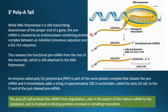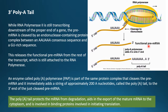The 5' cap has been added as the second step. Now, while RNA polymerase II is still transcribing downstream of the proper end of the gene, the pre-mRNA is cleaved by an endonuclease-containing protein complex. This complex cleaves between an AAUAAA consensus sequence and a GU-rich sequence, releasing the functional pre-mRNA from the rest of the transcript still attached to the polymerase.